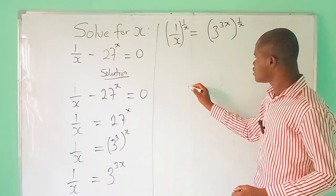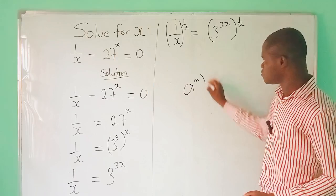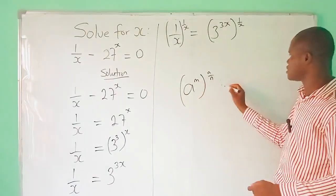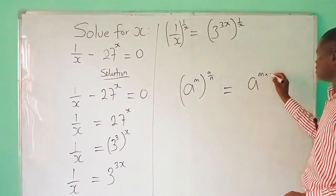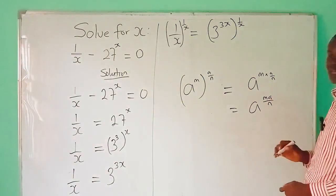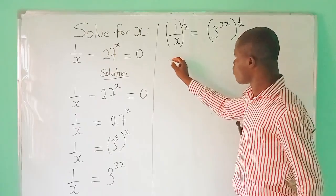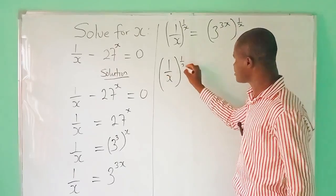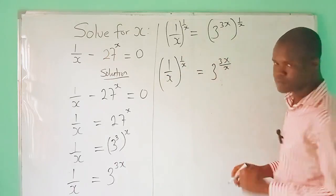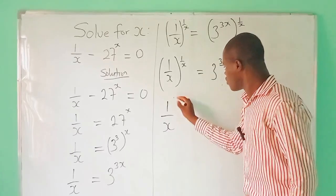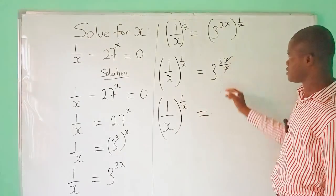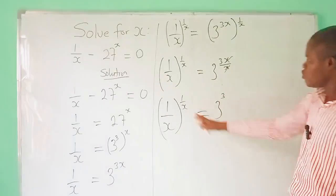In indices, if you have a raised to the power m bracket a over n, the power law says this power should multiply this power here. That means this equals a raised to the power m times a over n, which is a raised to the power m·a all over n. Applying that here, this is 1 over x all raised to the power 1 over x, equal to 3 raised to the power 3x all divided by x. So the x cancels with this x, and we have 1 over x, all raised to the power 1 over x, equal to 3 raised to the power 3.